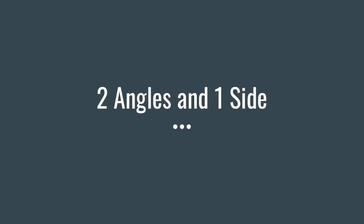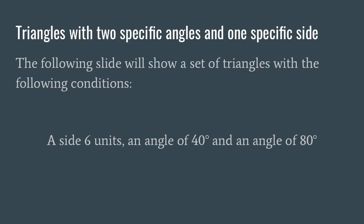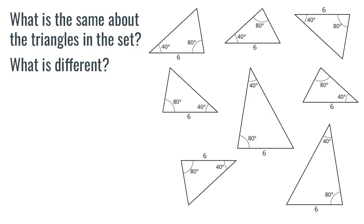Our next set of situations involves two angles and a side — triangles with two specific angles and one specific side. The following slide will show a set of triangles with a side of six units, an angle of 40 degrees, and an angle of 80 degrees.